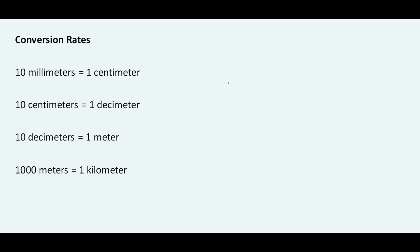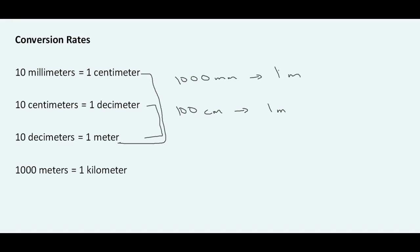Here are the conversion rates: 10 millimeters is one centimeter, 10 centimeters make up one decimeter, 10 decimeters will make up one meter, and 1000 meters is going to give us one kilometer. We can also infer that 100 centimeters gives us one meter, and 1000 millimeters would also give us one meter.